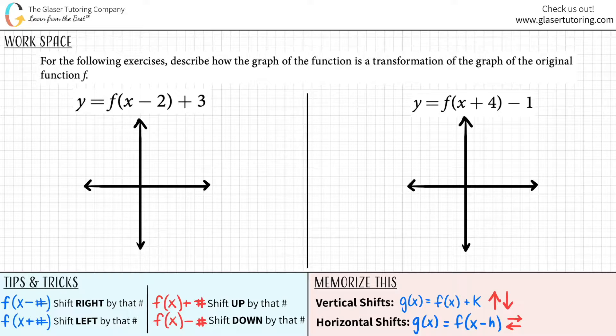For the following exercises, describe how the graph of the function is a transformation of the graph of the original function f. We have two examples here, and it looks like they're basing it off of f of x. So our original function was y equals f of x for both of them. But now the graph has transformed, whether vertically or horizontally, and we have to figure it out. It's like putting a piece of the puzzle together.